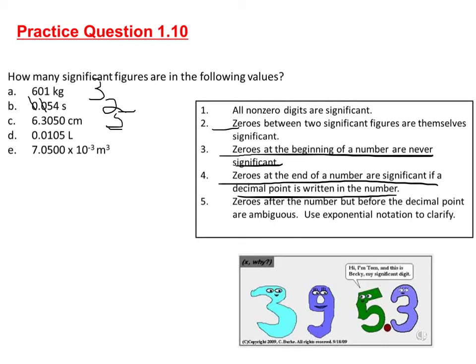D is 0.0105 liters. The one and the five are both significant. The zero held captive by that is significant, but once again, rule number three: zeros at the beginning of a number are never significant. So these zeros don't count, and we have three significant figures for that one.